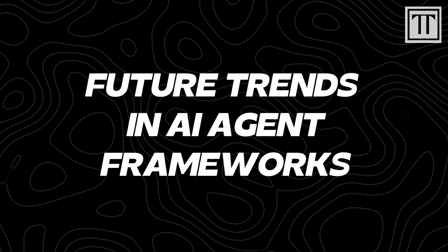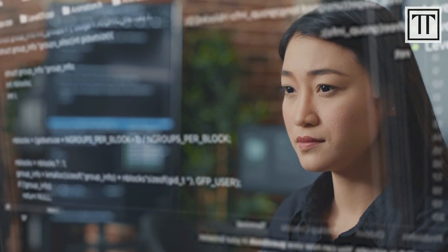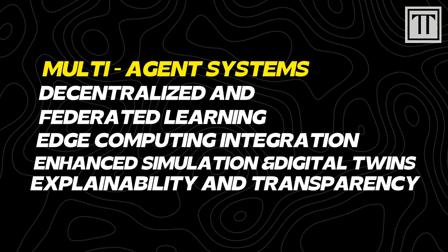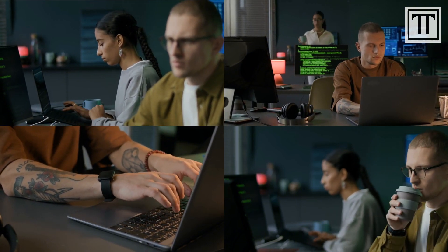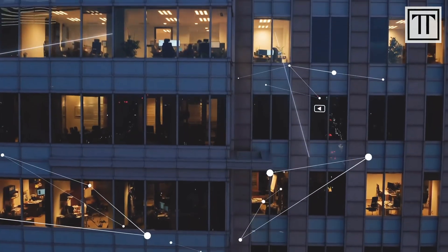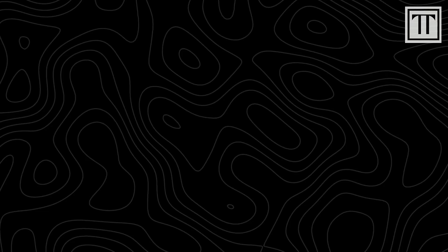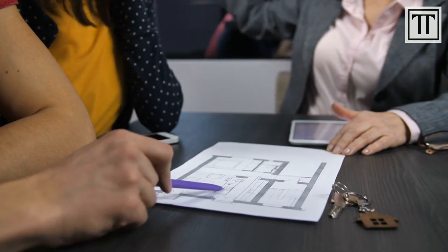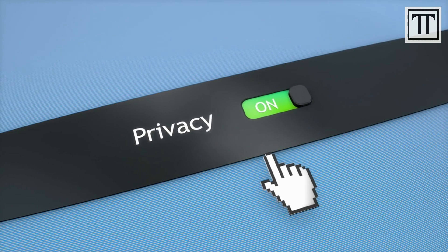Future trends in AI agent frameworks. The field of AI agents is continuously evolving. We can expect a surge in multi-agent systems, where multiple agents interact, cooperate, or compete within the same environment — driving the development of more sophisticated models for inter-agent communication and coordination. Decentralized approaches such as federated learning allow agents to learn collaboratively without sharing sensitive data, enhancing privacy while improving model robustness across distributed networks.